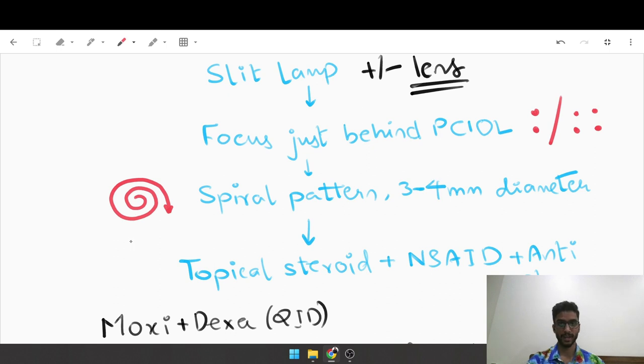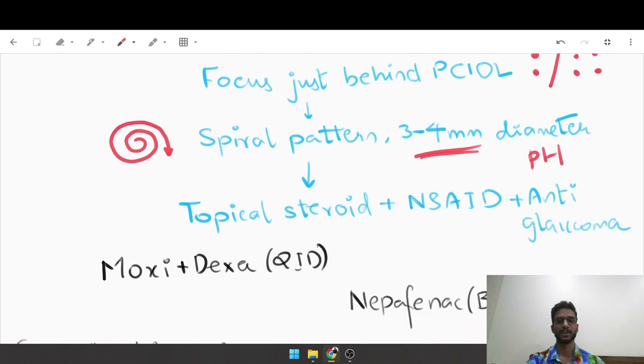How do you make sure that the vitreous does not come inside? You keep the size of the capsulotomy less than the size of the PCIOL. Three to four millimeters of diameter is sufficient. What about the PCO beyond three to four millimeters? It is visually insignificant - you are clearing up the visual axis which is the light falling onto the macula. Once that is clear, the vision is usually restored. Always make sure you take vision immediately before and immediately after performing the capsulotomy using a pinhole.